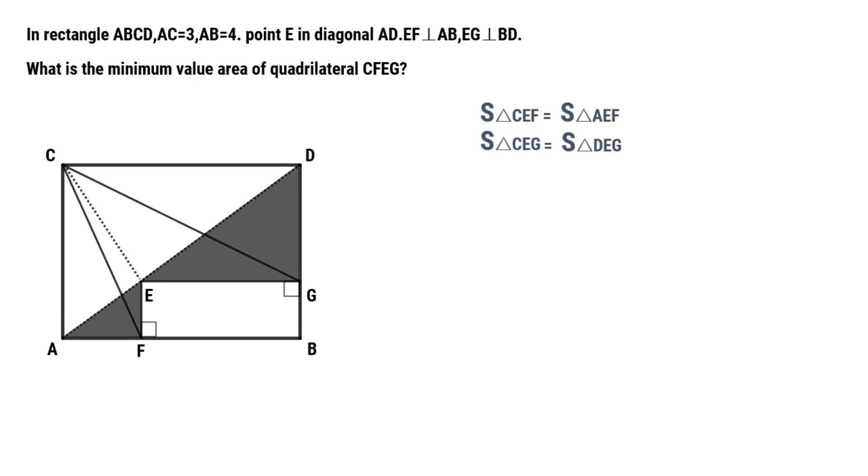So we get the equation: area of triangle CG plus CF equals triangle AF plus DG. Area of CG plus CF is the area of CFEG. Therefore, area of CFEG equals triangle AEF plus DG.